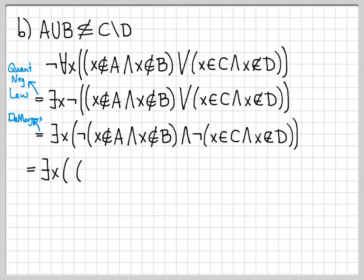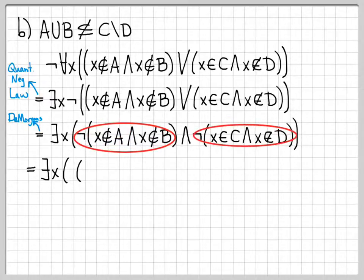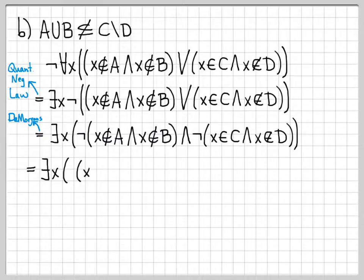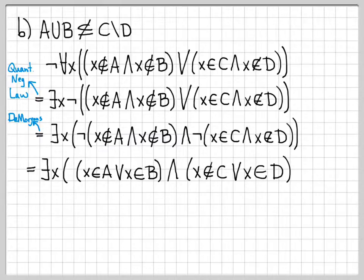Let's apply DeMorgan's one more time — distributing across both grouped expressions. For the first: x not in A and x not in B becomes x in A or x in B. We leave the middle and alone. For the second: x in C and x not in D becomes x not in C or x in D. So this is a logically equivalent statement to A union B is not a subset of C difference D.